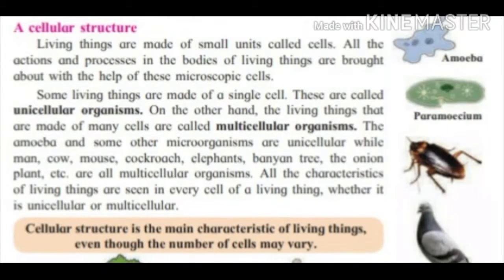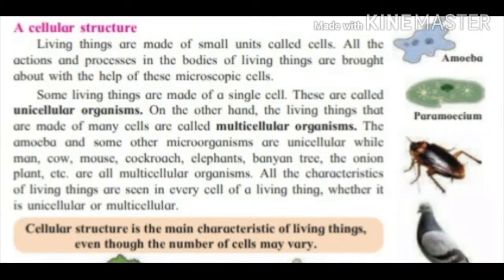Amoeba and other microorganisms are unicellular, while man, cow, mouse, cockroach, elephant, banyan tree, and the onion plant are all multicellular organisms. All the characteristics of living things are seen in every cell, whether the organism is unicellular or multicellular. Cellular structure is the main characteristic of living things, even though the number of cells may vary.